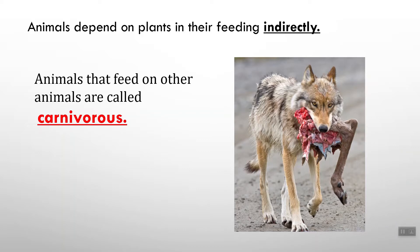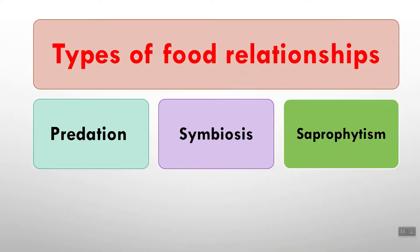Animals can also depend on plants indirectly — for example, this predator is eating a deer or goat, which was eating plants. Animals that feed on other animals are called carnivores. To summarize: herbivores feed only on plants, and carnivores feed only on other animals. There are three types of food relationships: predation, symbiosis, and saprophytism.